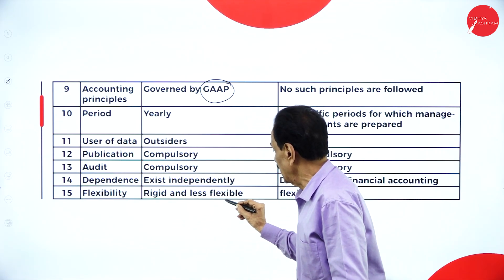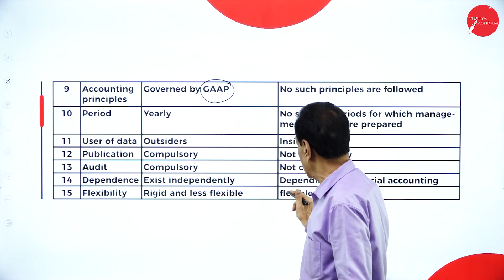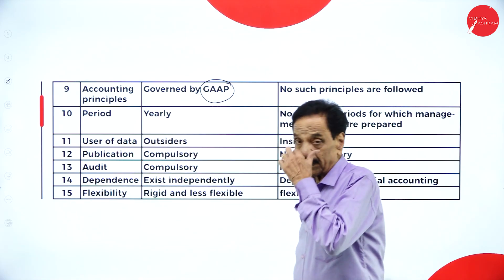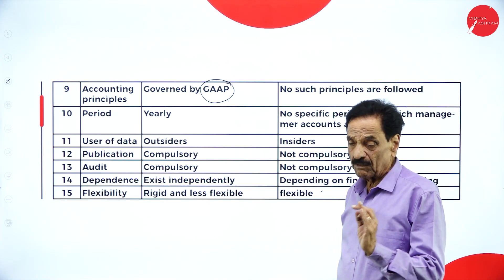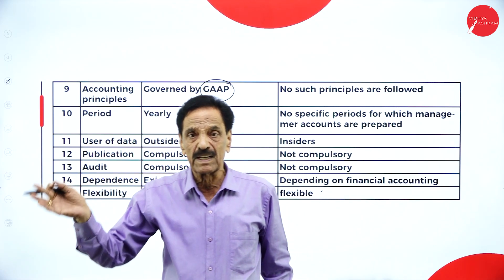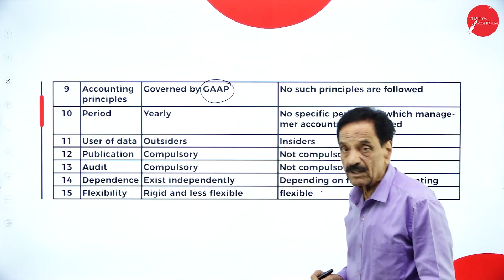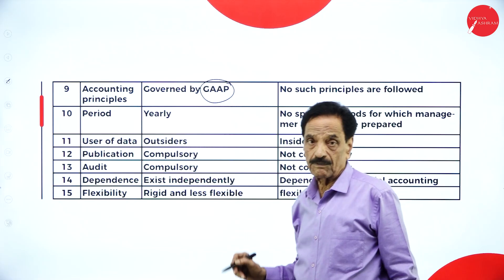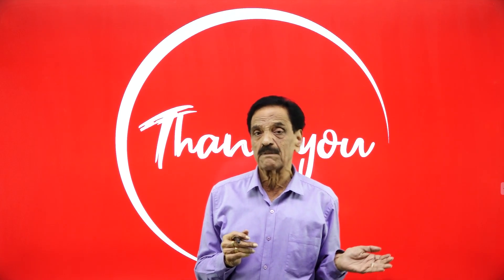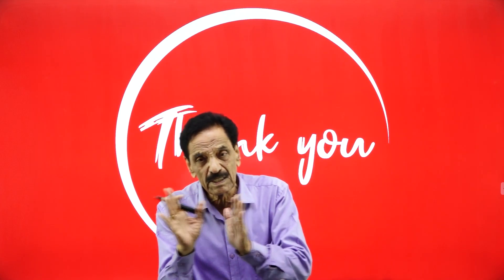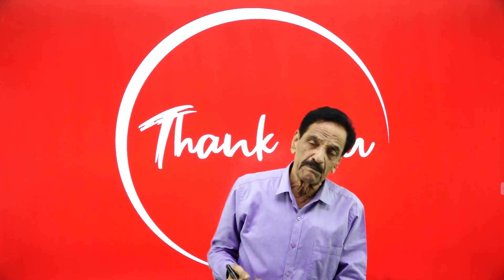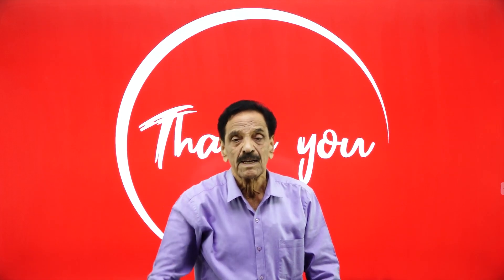Flexibility — Financial accounting is rigid and less flexible, while management accounting is flexible and can be adjusted according to management needs. This is important from an examination point of view. Today I have explained what is management accounting, its features and functions, and the difference between management accounting and financial accounting, which gives a basic idea about management accounting. In the next session, Session 2, we will go through problems. Till then, goodbye — meet in the next class.